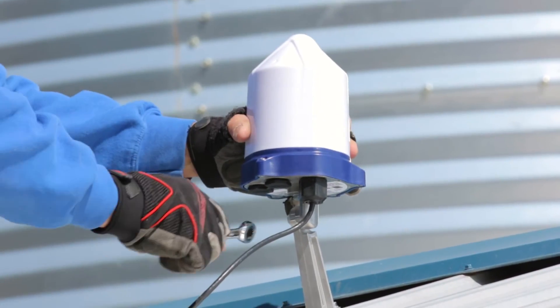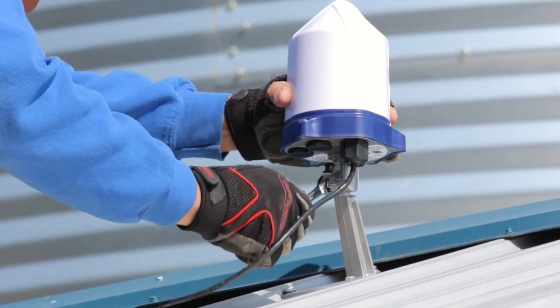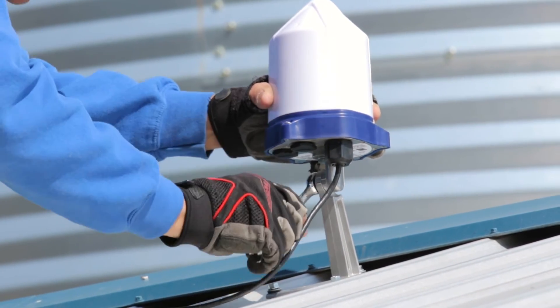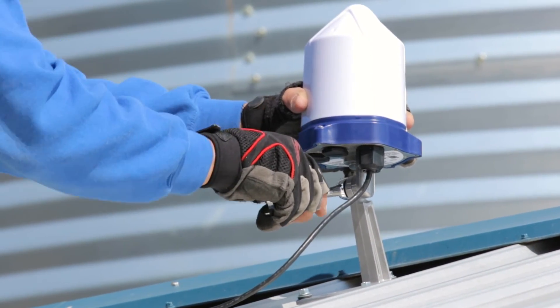Once the screws are in place, using the 7/16 inch wrench, tighten the Gateway Node on the foot mount so it stands in a vertical position.